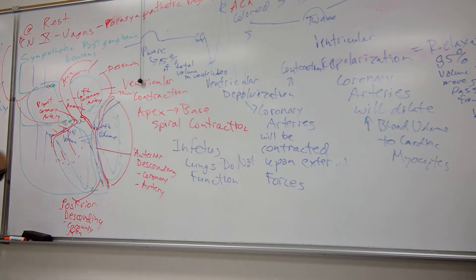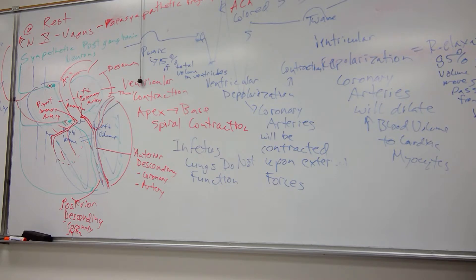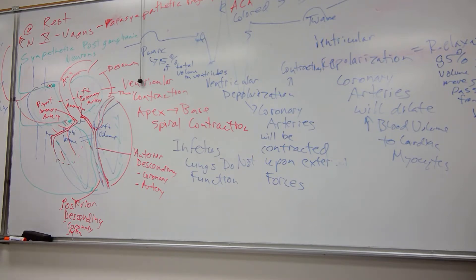Because the ventricles are relaxed and stretched, the coronary arteries receive blood flow during diastole. The semilunar valves open only when pressure inside the ventricle exceeds pressure in the corresponding great vessel — the aorta for the left side, the pulmonary trunk for the right. Both ventricles have inlets and outlets governed by this pressure gradient principle.